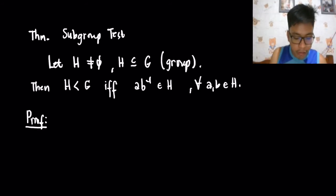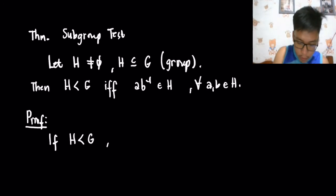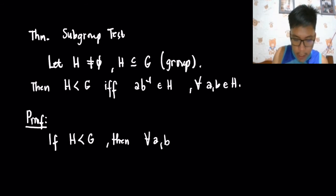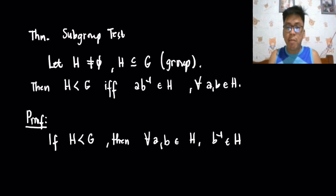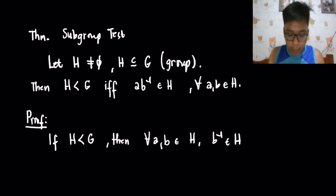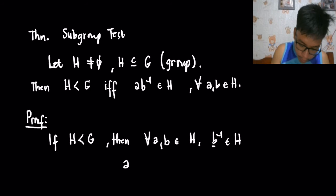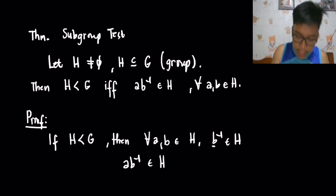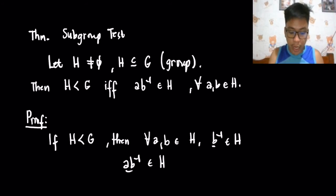The subgroup test states: let H be a non-empty subset of a group G. Then H is a subgroup of G if and only if AB⁻¹ is in H for every A, B in H. For the forward direction: if H is a subgroup of G, then for every A, B in H, B⁻¹ is also in H since H is a group. Then AB⁻¹ is an element of H because H is closed under the product.